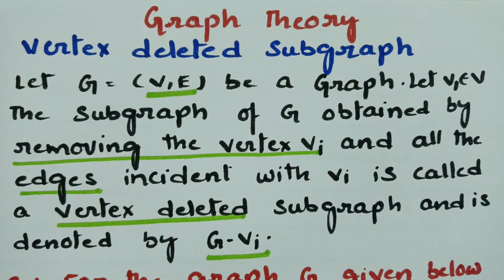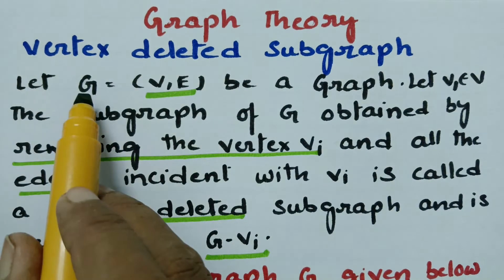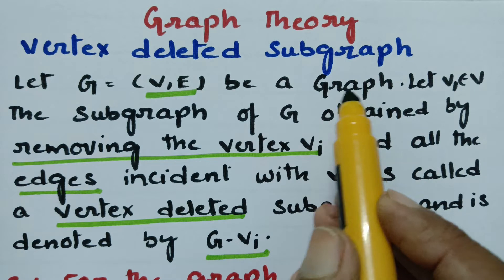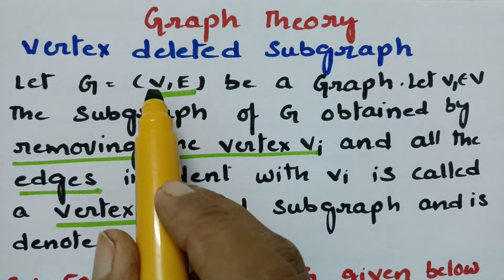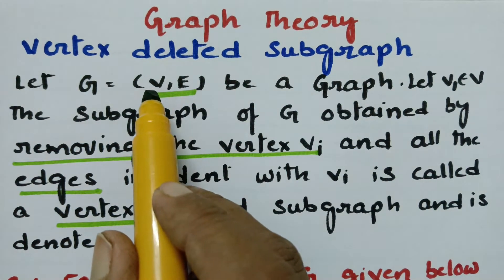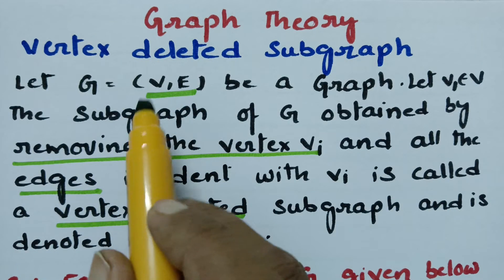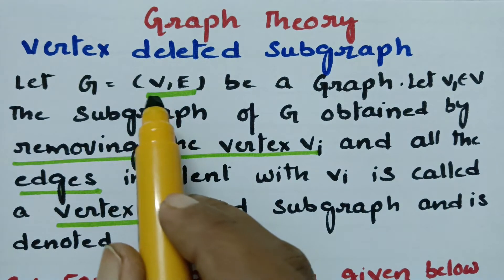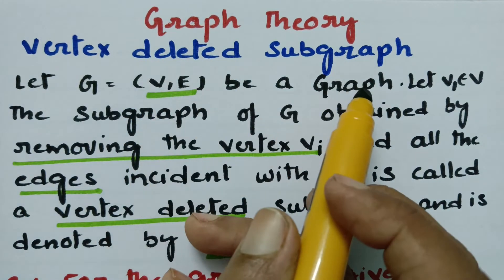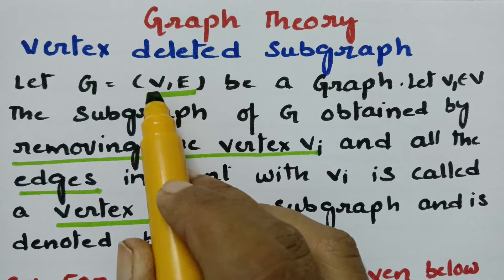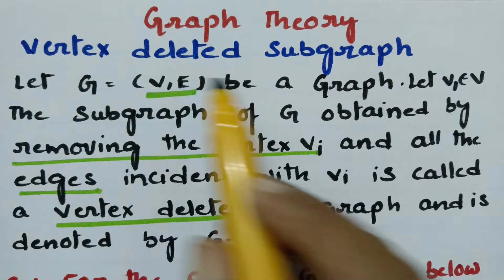Let G(V, E) be a graph, where V is the set of vertices (set of points) and E is the set of lines or edges. So the points and lines all together make a graph. G is the main graph with a certain number of vertices and edges.